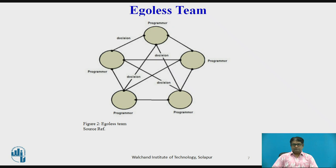The ego-less team structure is very simple and does not follow any formal team hierarchy. The main aim is to involve each and every member of the team in any decision making during the development process. A manager provides administrative leadership, while different members may provide technical leadership at different times. Decisions are made by common agreement among team members, and every member's suggestions are taken into account. Due to these characteristics, it is also termed as the democratic team structure, and is suitable for handling complex and difficult projects with many technical challenges.